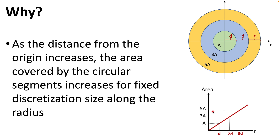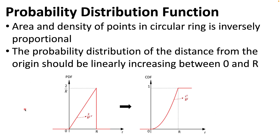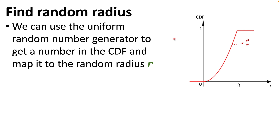With increasing radius, the area covered by circular rings increases linearly. Therefore the probability distribution function must act inversely — the density of points in a circular ring is inversely proportional to the area. As a result, the PDF of the distance from the origin should be linearly increasing between 0 and R. The corresponding cumulative distribution function (CDF) is the integral of that PDF.